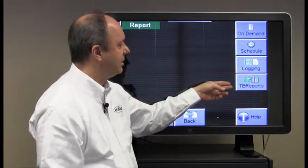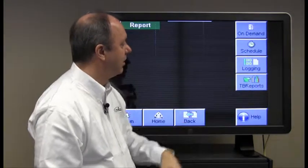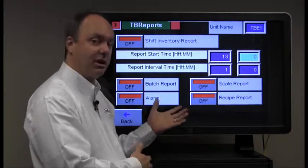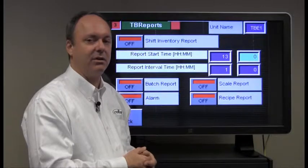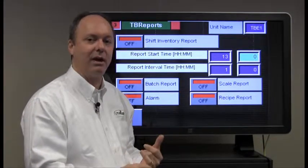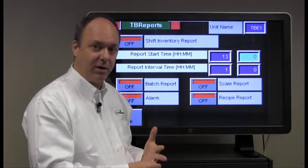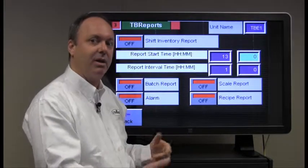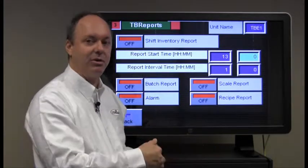The last system is called TrueBlend Reports. This is a software package that allows you to connect to your touch screen back to a PC using Conair's software package called TrueBlend Reports. We have a manual for that particular piece of software and we have another video that we'll do to explain how to set that up with your PC. But on the touch screen itself, once you have your PC set up with the TrueBlend Reports,